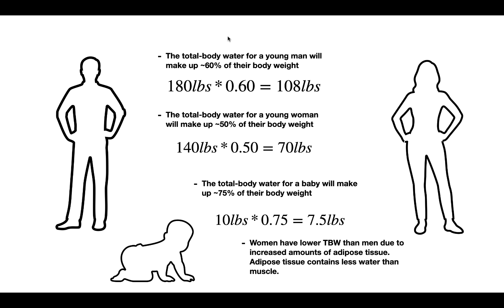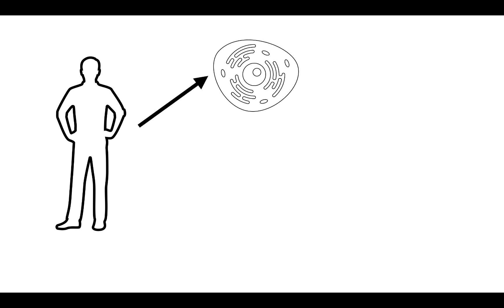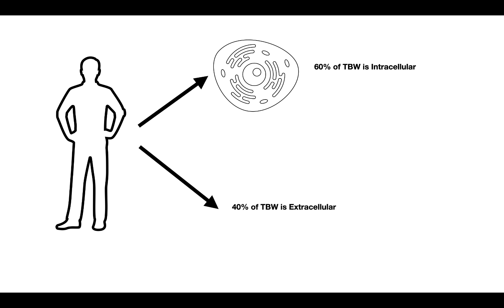Now let's talk about how this water is divided between the intracellular fluid and the extracellular fluid. Around 60% of the total body water content is found in the intracellular fluid — so the majority of our water is inside our cells. The remaining 40% is found in the extracellular fluid: inside your blood plasma, interstitial fluid, and transcellular fluid.